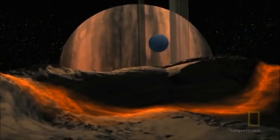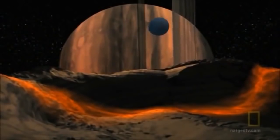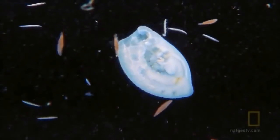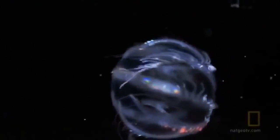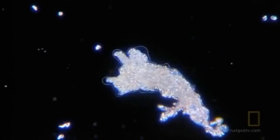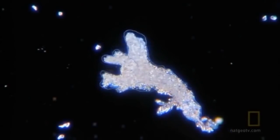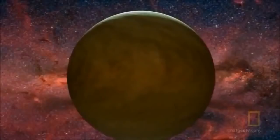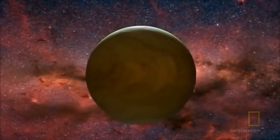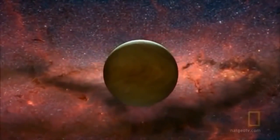If anything lives here, it will be single cells like common bacteria found on Earth, not complex life forms. Without a sun to provide photosynthesis, these tiny organisms derive their energy from the chemistry in the soil of the planimo or its moon.